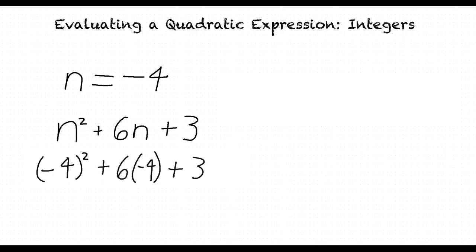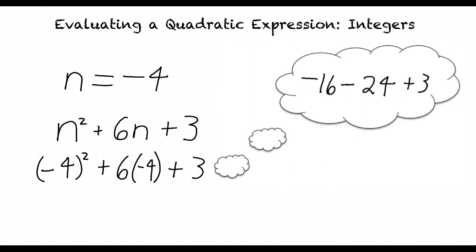Simplifying this would result in negative 16 minus 24 plus 3, right? Well, not quite.